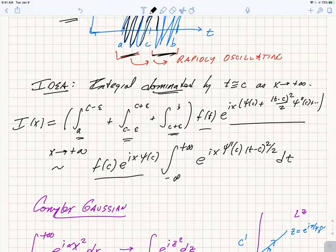In the usual way, we can take out the pre-factor f evaluated at c. The first term is e^(ixψ(c)) from the expansion. And what's left is just a complex Gaussian, the integral from minus infinity to plus infinity of e^(ixψ''(c)(t-c)²/2).